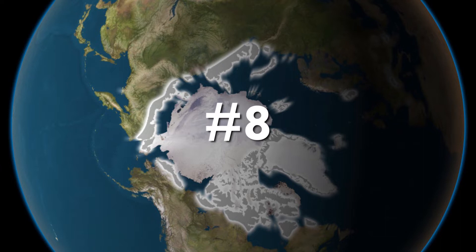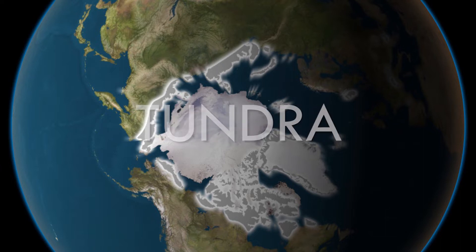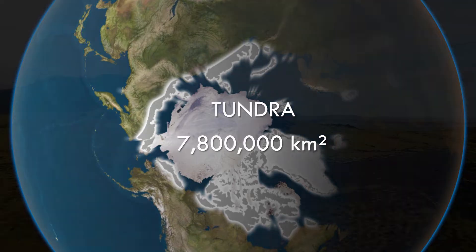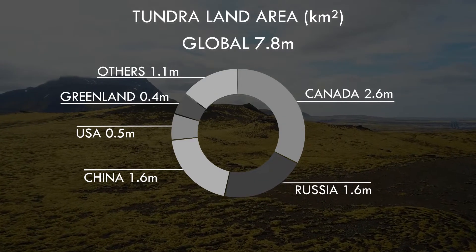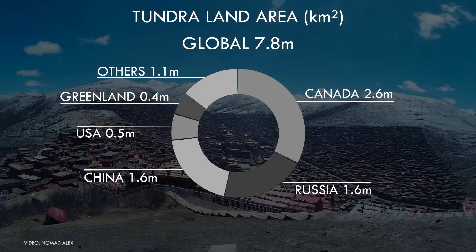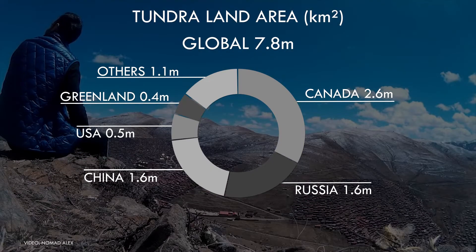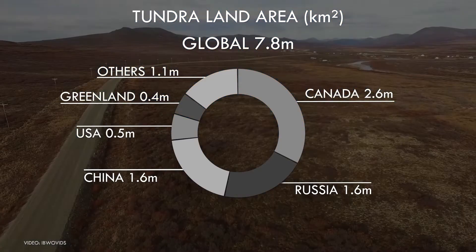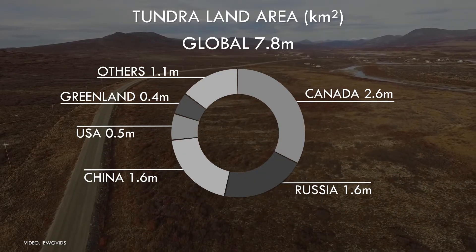Moving on to number 8, and we switch to the opposite end of the earth, and the opposite in terms of temperatures, with the frigid wastes of the tundra. Most of this land is in the Arctic, with over half of it in just two countries – Russia and Canada. China's contribution here is the extensive Tibetan plateau, which, being at an altitude of over 20,000 feet, is predominantly alpine tundra. The United States fraction here is almost all from one state – Alaska.